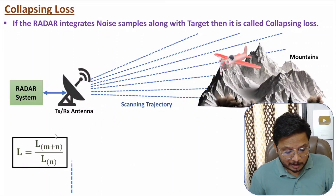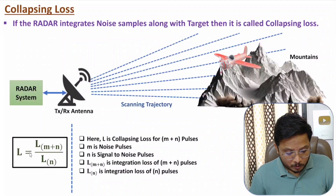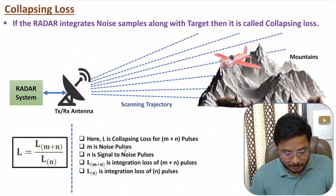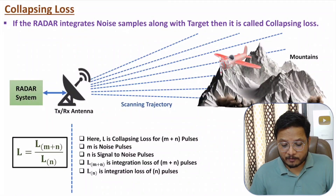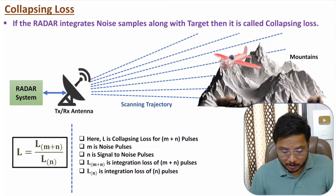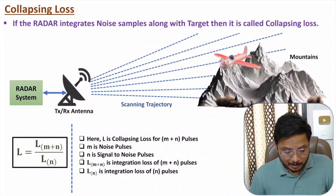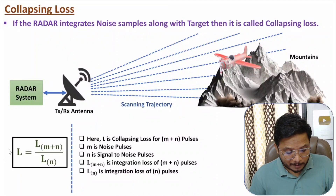The collapsing loss is calculated as: L = L(M+N) / L(N), where L is the collapsing loss for M+N pulses, M is the number of noise pulses, and N is the number of signal-plus-noise pulses. L(M+N) is the integration loss for M+N pulses, and L(N) is the integration loss for N pulses.